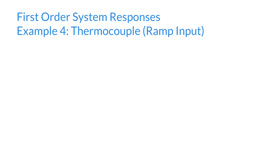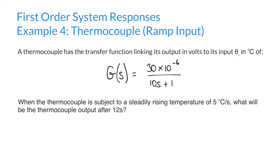Hello and welcome to this fourth example of first-order system responses. Assuming you've been watching our previous videos, we're going to jump straight in to this fourth question. A thermocouple has the transfer function linking its output in volts to its input theta in degrees Celsius of 30 times 10 to the minus 6 over 10s plus 1. When the thermocouple is subject to a steadily rising temperature input of 5 degrees Celsius per second, what will be the thermocouple output after 12 seconds?